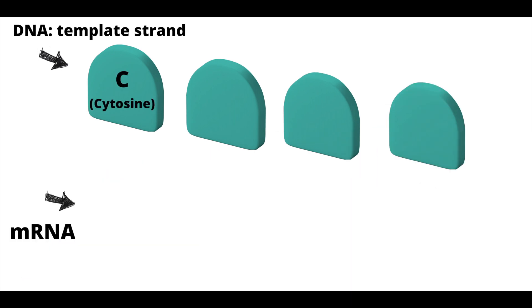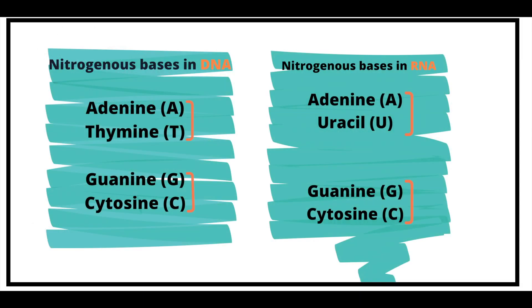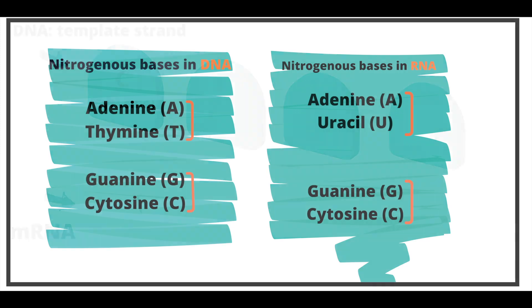Each bubble represents nucleotides or nitrogenous bases specifically. Remember that nitrogenous bases pair up. In DNA, adenine and thymine pair, and guanine and cytosine pair. In RNA, thymine is replaced with uracil, so adenine and uracil pair, and guanine and cytosine pair.